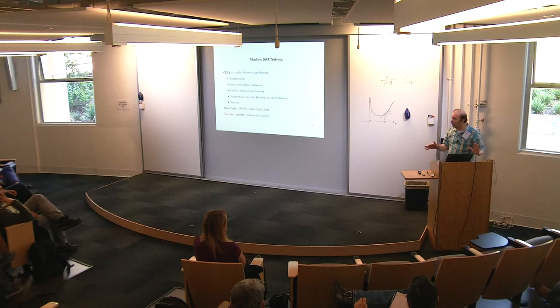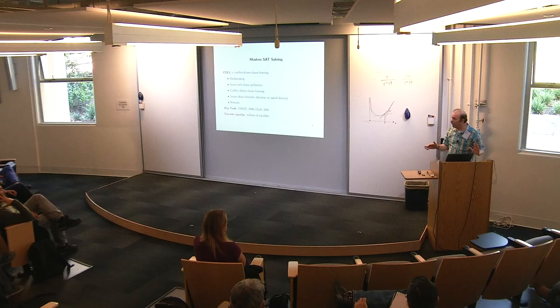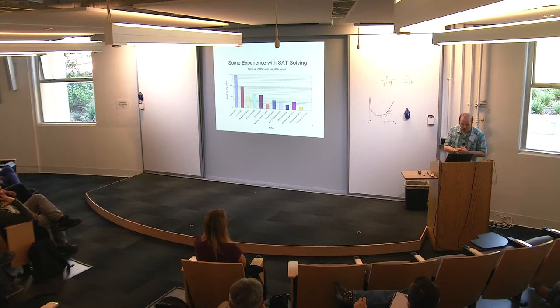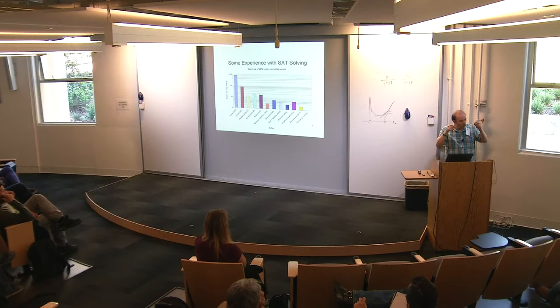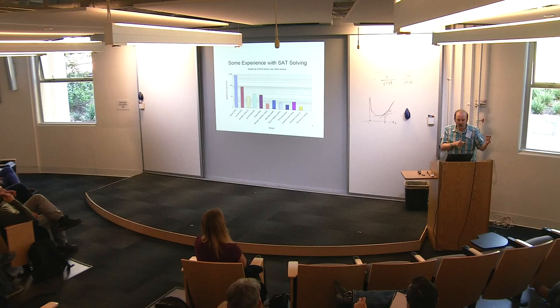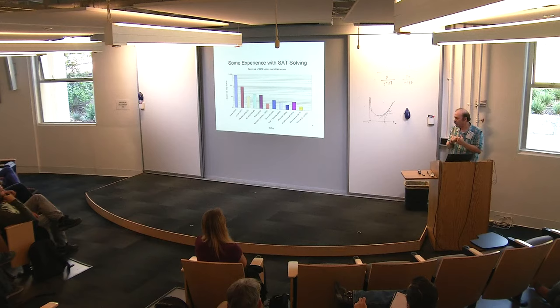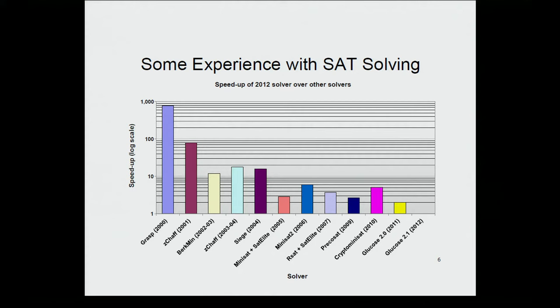And so the amazing thing is today we can solve problems, industrial problems, with millions of variables. And Sanjit Seshia, here from Berkeley, a few years ago ran this nice experiment. He took 12 years of SAT solvers and ran them on a 2012 machine on one benchmark and showed us on this benchmark GRASP ran in 800 seconds and Glucose in 2012 took one second. So we see three orders of magnitude improvement roughly over a decade and it is so impressive that people talk about Moore's law for SAT solvers. Some social phenomenon by which we're still continuing to improve in such a dramatic fashion.